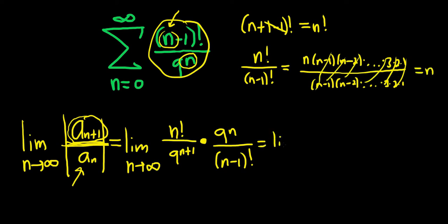So this equals the limit as n goes to infinity of n times something. Now what about the 9's? We have 9^n over 9^{n+1}.